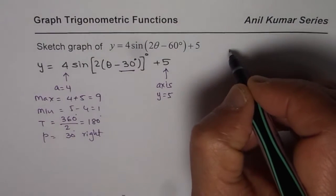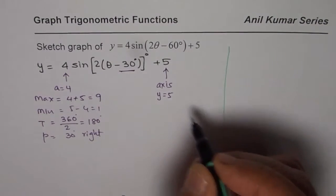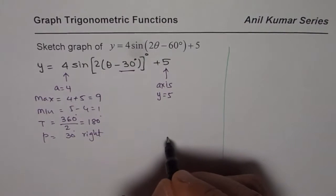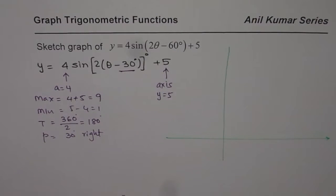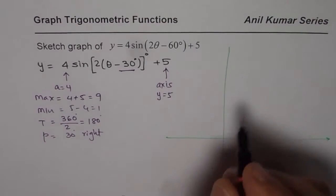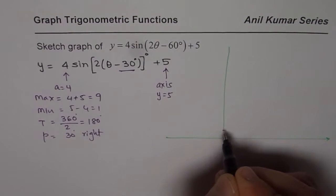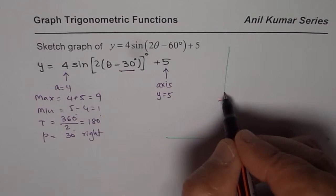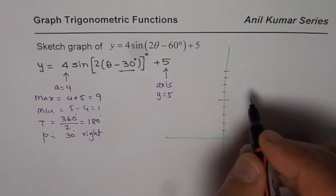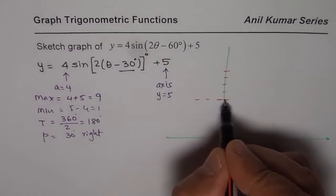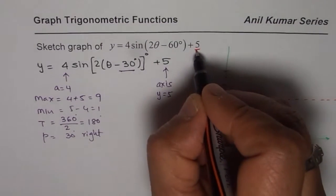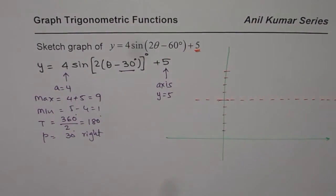Let's apply all these transformations and sketch the graph. Let me first draw the axis. Since we are moving up by 5 units, let me take the x axis here. First step is always sketch the axis. Let's say this is units 1, 2, 3, 4, 5 and then 1, 2, 3, 4. At 5 we have the axis.